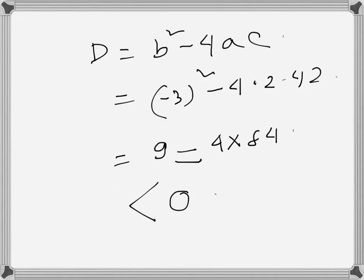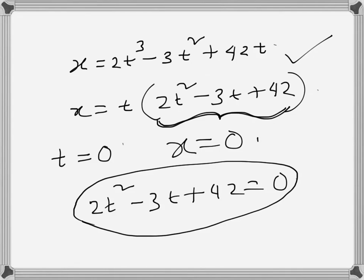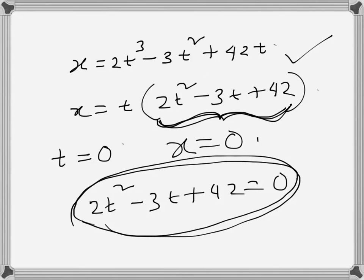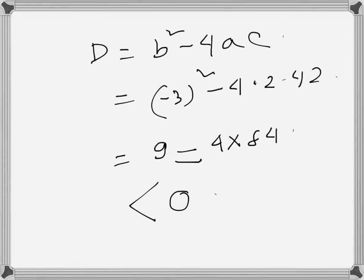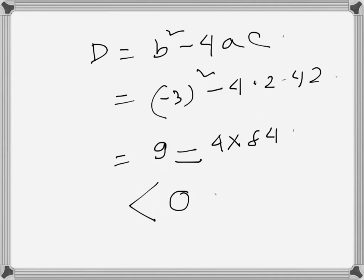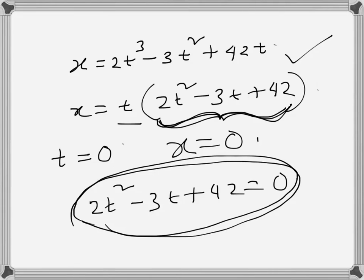Whatever the calculation, this is less than 0 due to the negative sign. Since the discriminant is less than 0, the quadratic equation does not have any real root. So the particle does not return to origin again — it is only at origin when t equals 0, that is, initially.